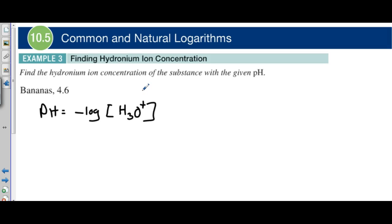Let's go ahead and plug this in. The pH is going to be 4.6, and then we have negative log of our hydrogen ion.